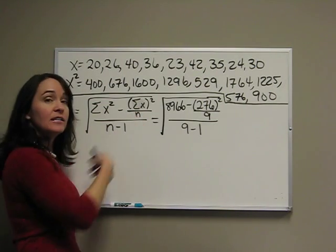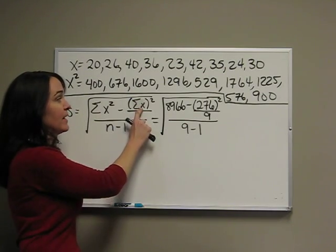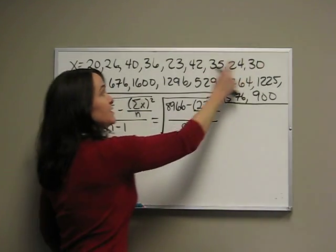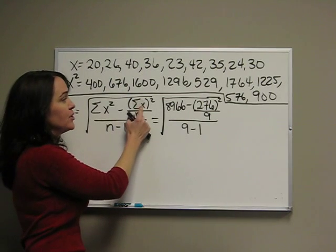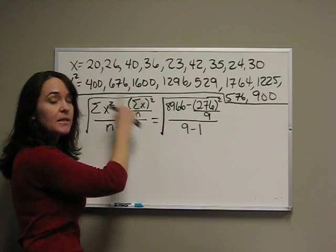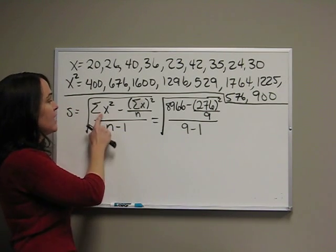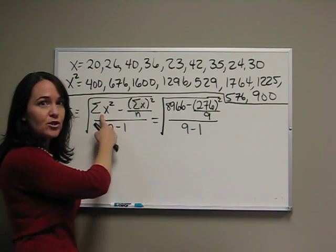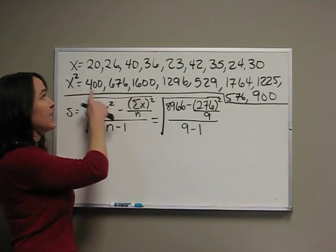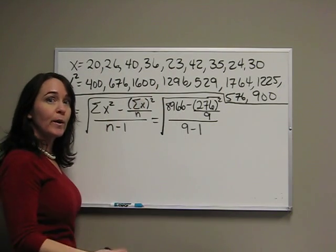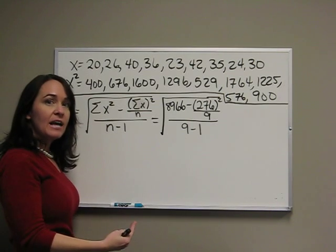Now, n is just our sample size, just like before. Summation of x means we're going to add up these first numbers. The summation of x all squared means once we add it up, then we square that number. Now, this is our new symbol, summation of x squared. This means we're going to take our x's, we're going to square them first, and then add.